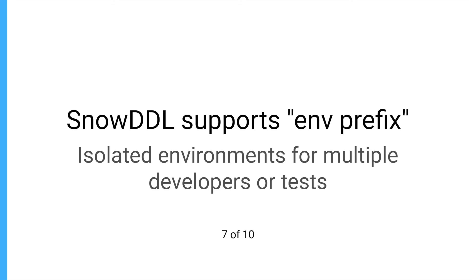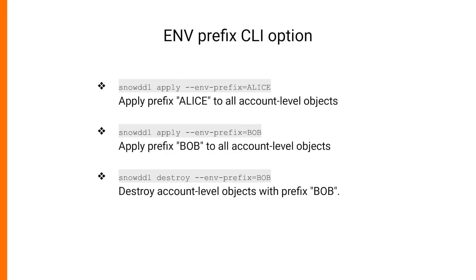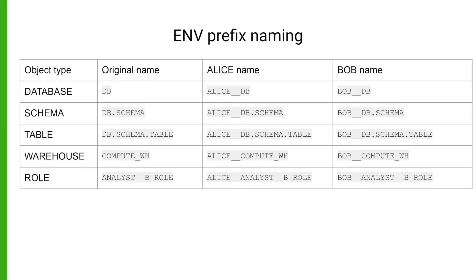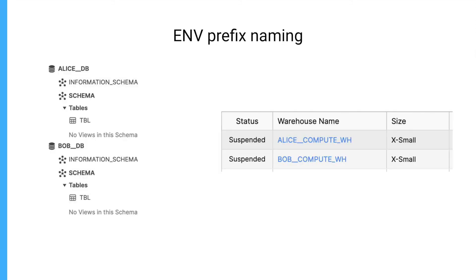Snow DDL supports an advanced feature called Env prefix. It is used to create multiple isolated environments for each developer or even each test run. Env prefix can be applied using a simple command line option. When Env prefix is applied, all objects at the account level are created with a defined prefix — this applies to databases, warehouses, roles, etc. However, schema objects like tables and views remain the same. This creates a unique situation where every developer has their own version of the environment and they can work on different tasks simultaneously without clashing with each other, so you may forget about any development conflicts.